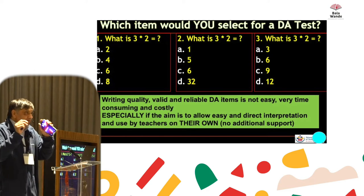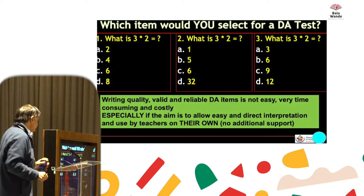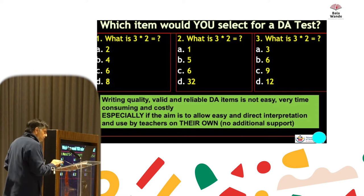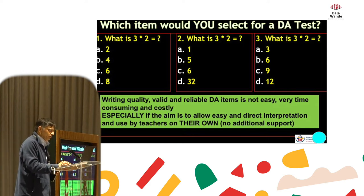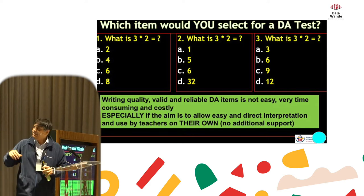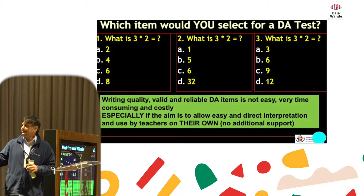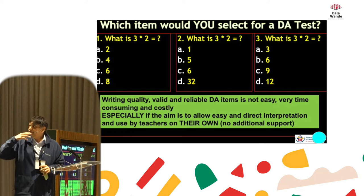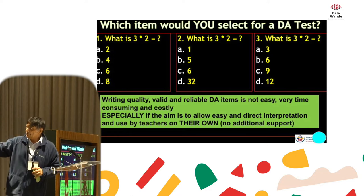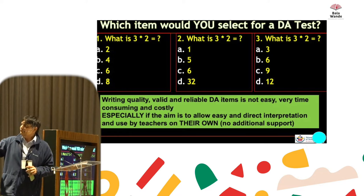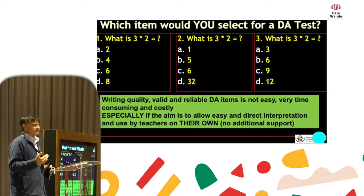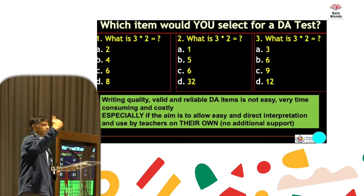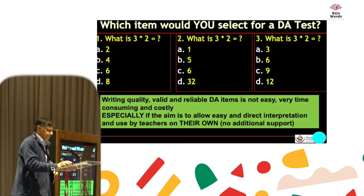That's really, really important. The point is it's costly, especially if you're imprecise. And secondly, it allows direct interpretation by teachers on their own.